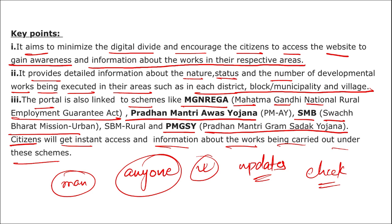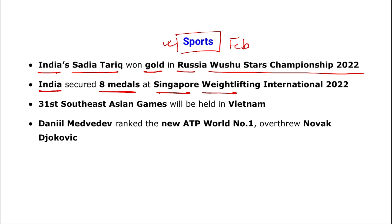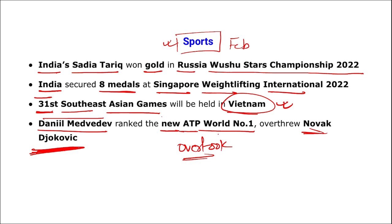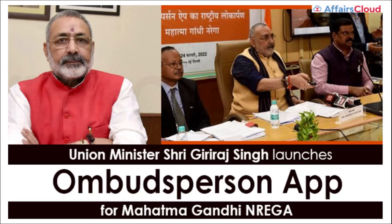Sports quick revision for February: India's Sadhya Tarik won gold at the Russia Wushu Star Championship 2022. India secured eight medals at Singapore Weightlifting International 2022. The 31st edition of South East Asian Games will be held in Vietnam. Daniel Medvedev became the new ATP World Number 1 in tennis, overtaking Novak Djokovic.